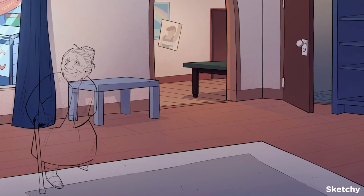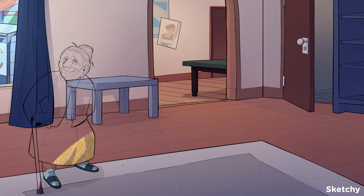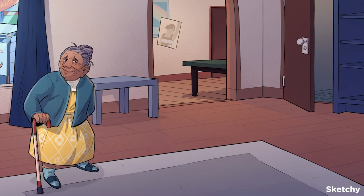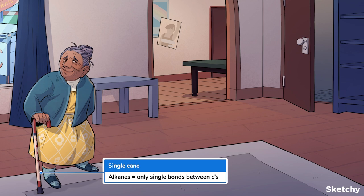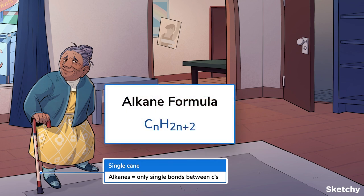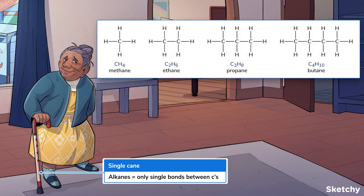Looks like Grandma tagged along to make sure these coeds keep their behavior basic and simple, just like simple hydrocarbon molecules. They call them hydrocarbons because all they've got is hydrogen and carbon. Grandma's straight single cane represents alkanes. Alkanes provide the bare-bones structure of carbon backbones — hydrocarbon chains in which the carbons are bonded to other carbons by only single bonds. In their simplest form as straight chains of carbons, alkanes are named by their length.